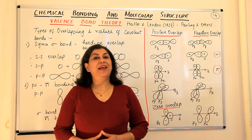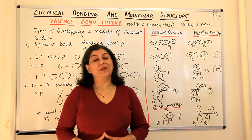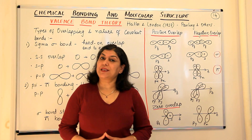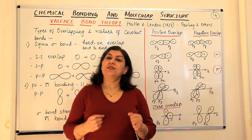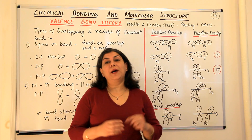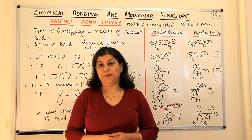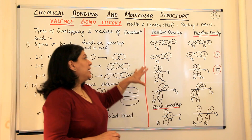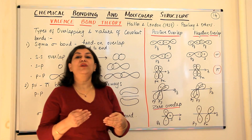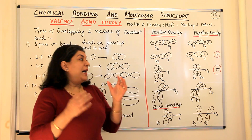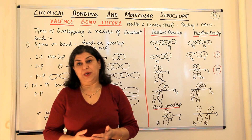Hello, I'm Seema and welcome to part 14 of the chapter, Chemical Bonding and Molecular Structure. I was explaining the valence bond theory to you. Moving on, let me explain a little bit more about the types of bonds that are formed as a result of this overlapping. In the previous video, I explained the positive overlap and the negative overlap. When is an overlap effective? I will now elaborate a little bit more on the types of overlap.